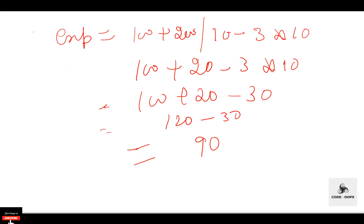Associativity is only used when there are two or more operators of the same precedence. We can use parentheses to change the order of evaluation, and all operators with the same precedence have the same associativity. The precedence of postfix ++ is higher than prefix ++, and their associativity also differs: postfix ++ is left to right, while prefix ++ is right to left. The comma operator has the least precedence among all operators and should be used carefully.